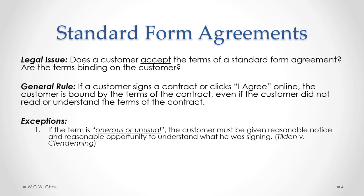The first exception comes from the case Tilden v Clendenning. Under that case, if a contractual term is considered to be onerous or unusual, the customer has to be given reasonable notice of that onerous or unusual term and also a reasonable opportunity to understand what he was signing. If those requirements are not met, then that onerous or unusual term is invalid.